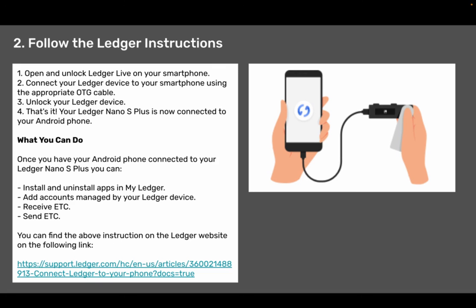What you can do: once you have your Android phone connected to your Ledger Nano S Plus, you can install and uninstall apps in My Ledger, add accounts managed by your Ledger device, receive ETC, and send ETC. You can find the above instructions on the Ledger website at the following link.